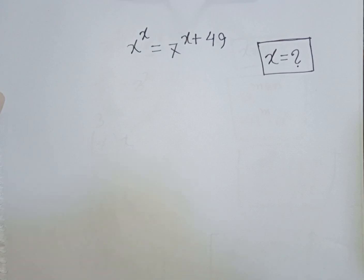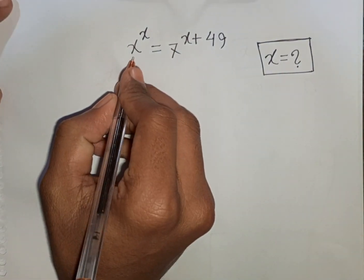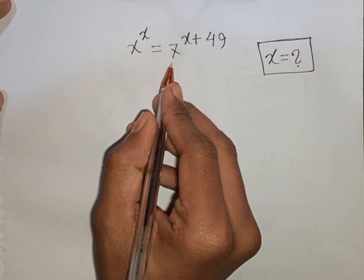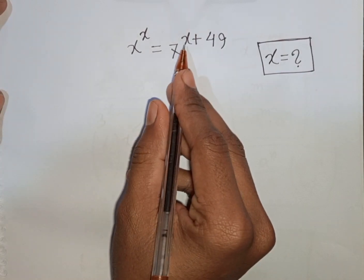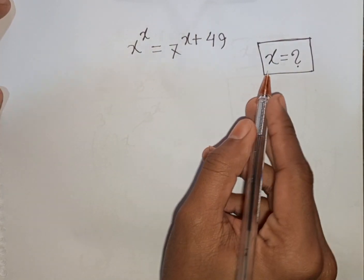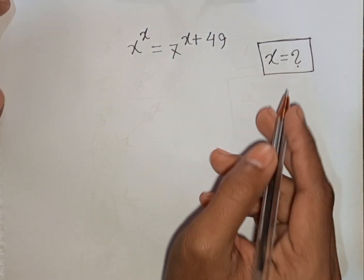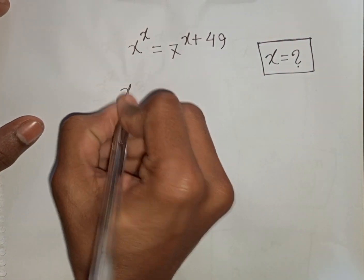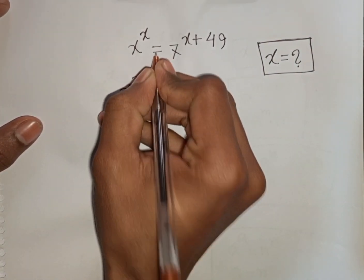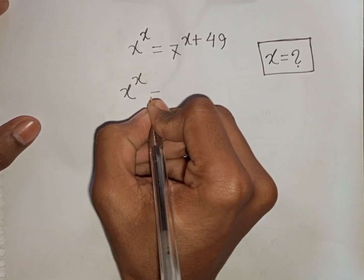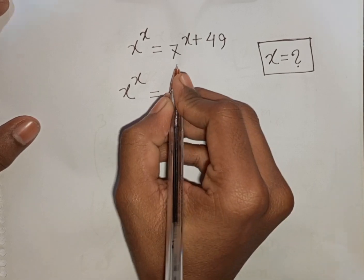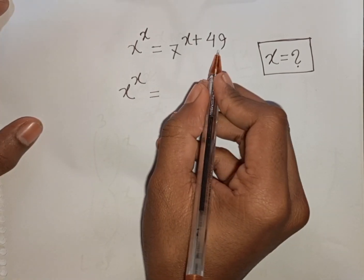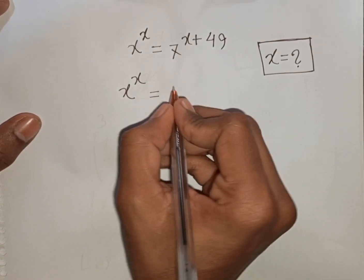How to solve x to the power x equals 7 to the power of x plus 49 — find the value of x. So we have x^x = 7^(x+49).